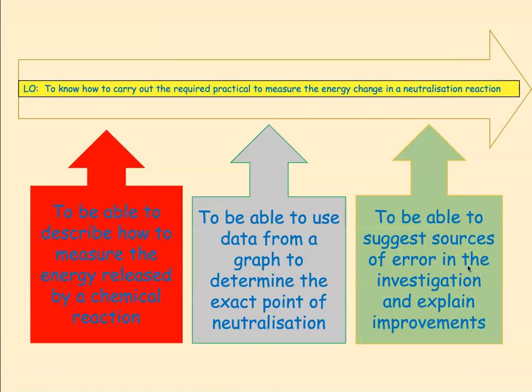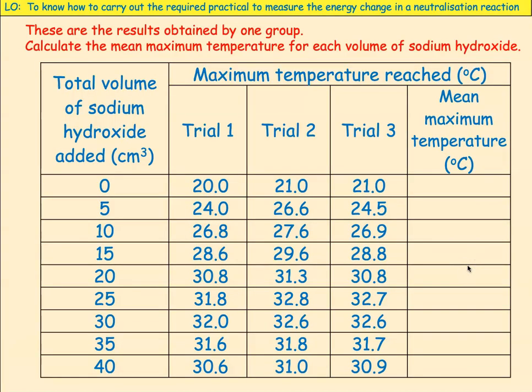Now we want to look at the results and determine the exact point of neutralisation. Here is a set of results obtained by a group. Calculate the mean maximum temperature for each volume of sodium hydroxide, remembering to add them up and divide by three — but only if all three results are valid and none are anomalous. You might need a calculator, so pause the video now and calculate the mean values.